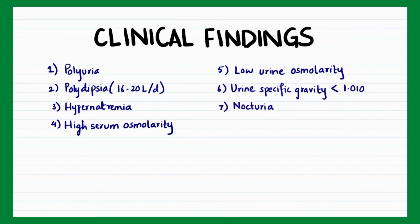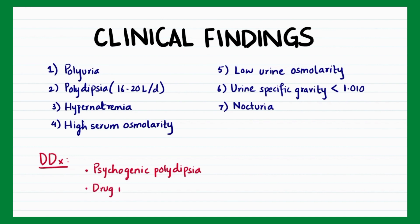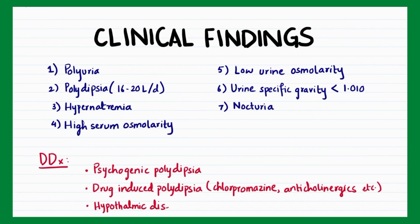Differentials of diabetes insipidus include psychogenic polydipsia, drug-induced polydipsia from chlorpromazine or anticholinergics, and hypothalamic diseases.